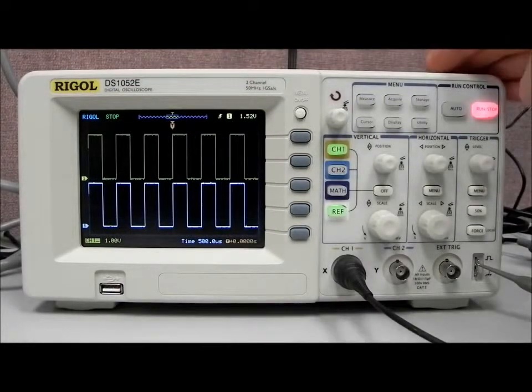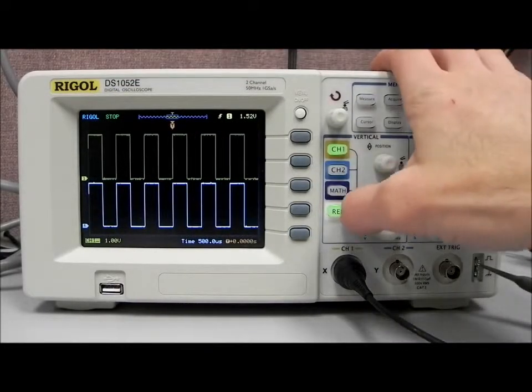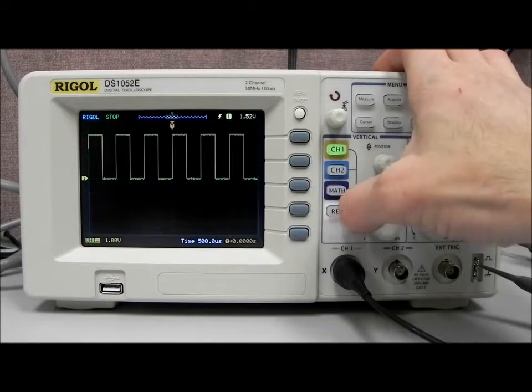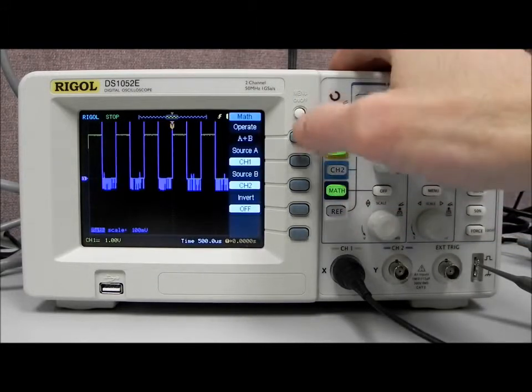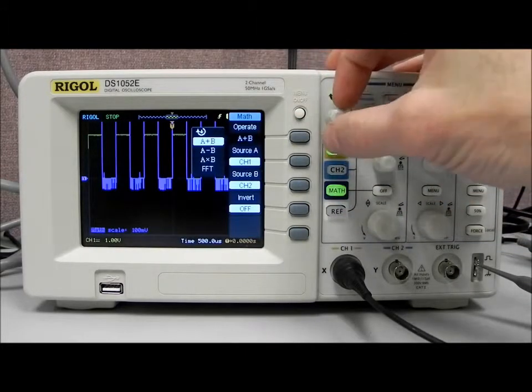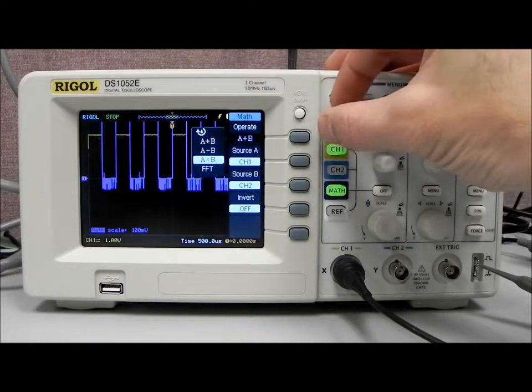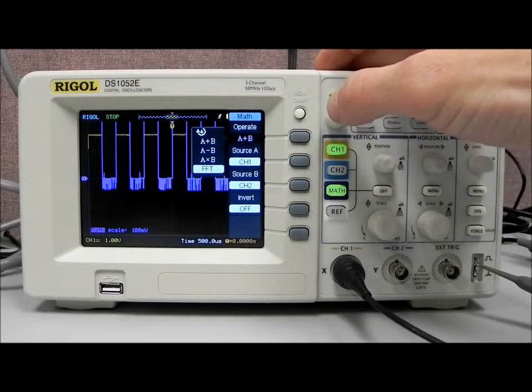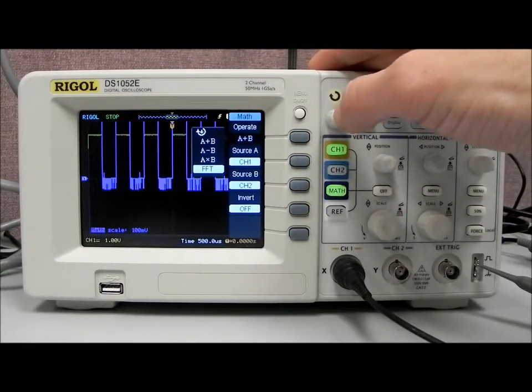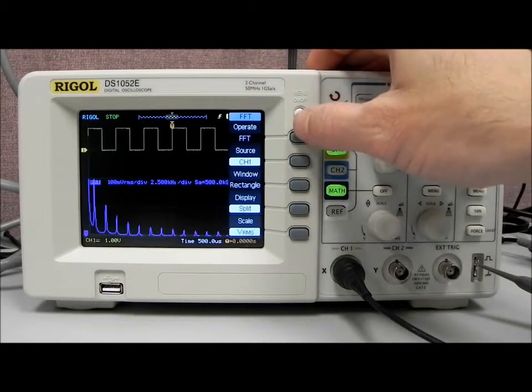Now let's take a closer look at some other functions that we have available to us. I'm going to disable reference, and I'm going to enable math. And you'll see in operate for the math menu, we have a number of functions available. A plus B, A minus B, A times B, and then FFT. So we can do a fast Fourier transform analysis of that incoming waveform and break it down into its frequency components. Let's select FFT.